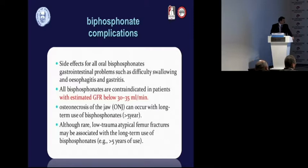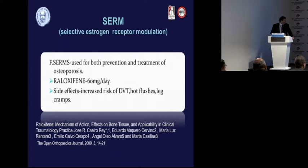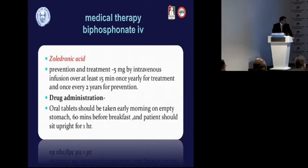All bisphosphonates are contraindicated in patients with an estimated GFR below 30–35 ml/min. The selective estrogen receptor modulators, so-called SERMs, such as raloxifene, can be used at 60 mg per day, and these also carry side effects similar to those of zoledronic acid.